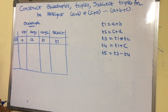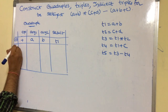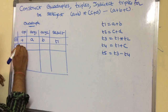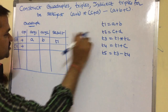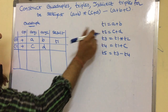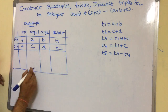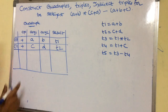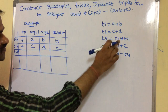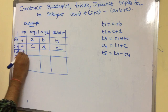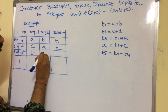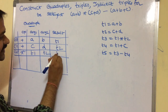Next, t2 is equal to c plus d, stored at address 1. Operation is plus, argument 1 is c, argument 2 is d, result is t2. Then t3 is equal to t1 star t2, stored at address 2. Operation is star, argument 1 is t1, argument 2 is t2, result is t3.